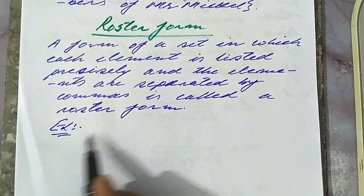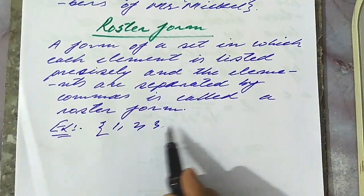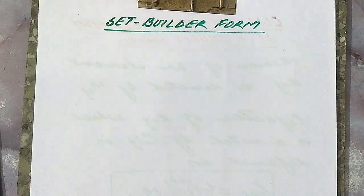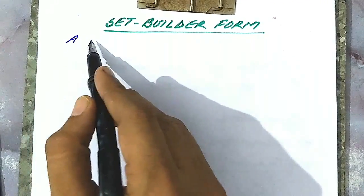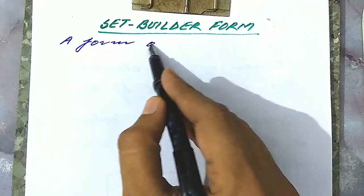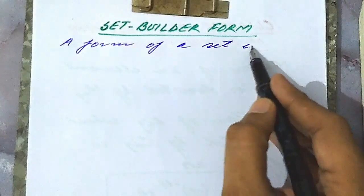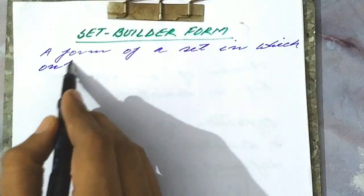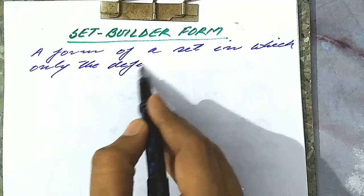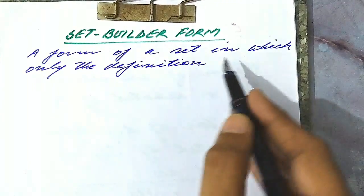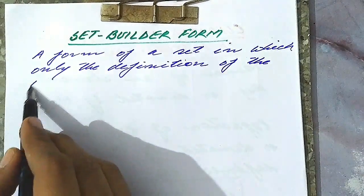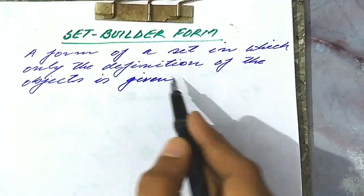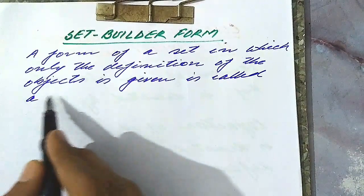For example, the set {1, 2, 3, 4, 5} is an example of roster form. Now, set builder form is the form of a set in which only the definition of the objects is given. This is called set builder form.